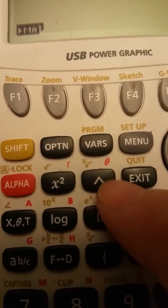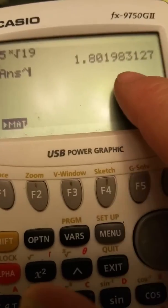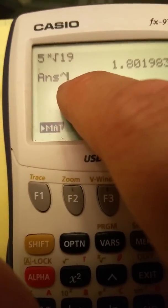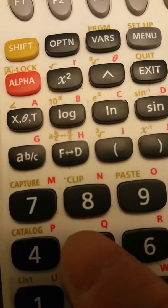If I hit the power button right here, it will take that answer, the answer 1.801983127, and it does whatever I'm pressing in. So I'm pressing the power button, raise your power, power five. So I hit the number five.